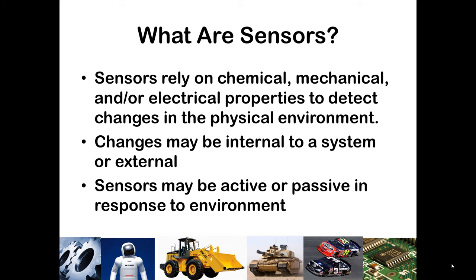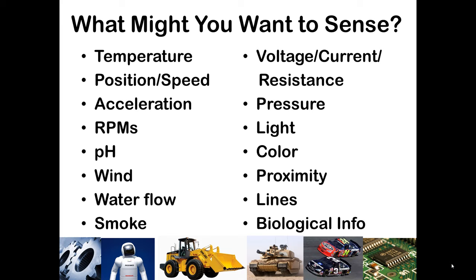We'll see examples of both active and passive sensors as we go through this lecture. Here are just some ideas of things you might want to sense. Temperature sensing is very common. You might also be interested in position or speed — if you're talking about a vehicle, a forklift, or an aircraft, you want to know how fast they're going or where they're located.